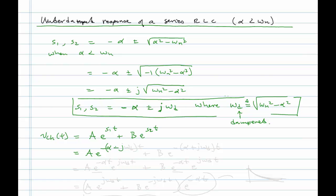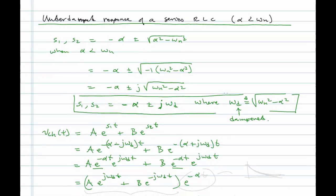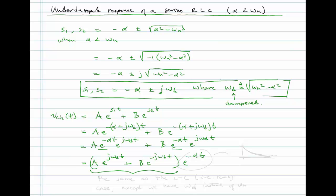Substituting, we get A·e^((-alpha - j·omega_D)t) + B·e^((-alpha + j·omega_D)t). There's a common term, so we factor to get e^(-alpha·t) times [A·e^(j·omega_D·t) + B·e^(-j·omega_D·t)]. We notice this bracketed expression is the same as the LC (R=0) case, except with omega_D instead of omega_N — the same term that produces a sine or cosine wave, now multiplied by the predicted exponential decay from adding resistance.